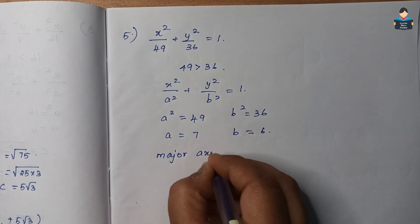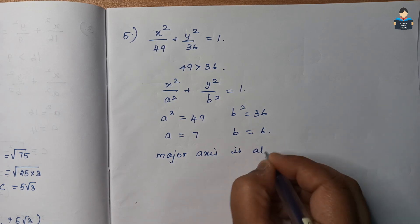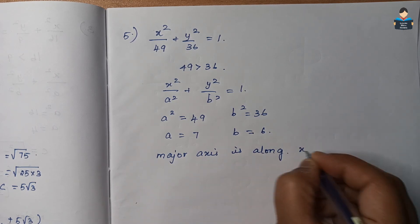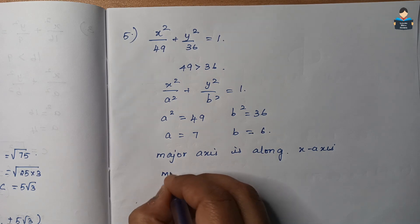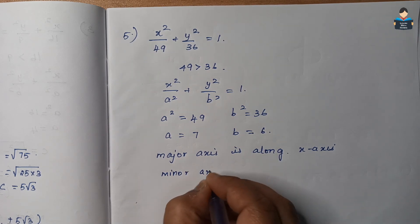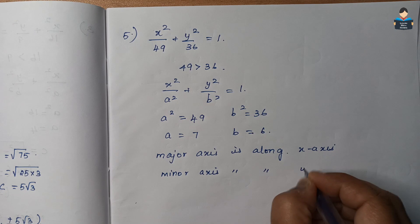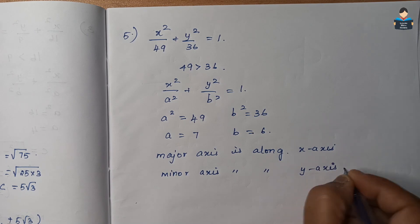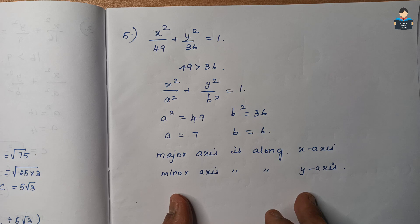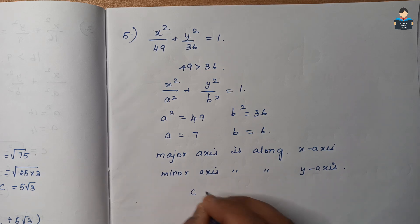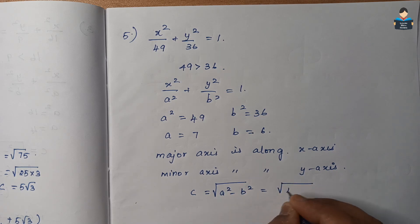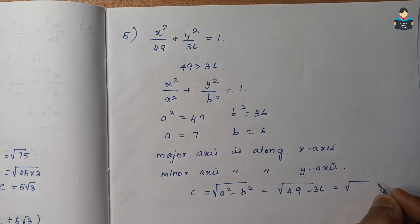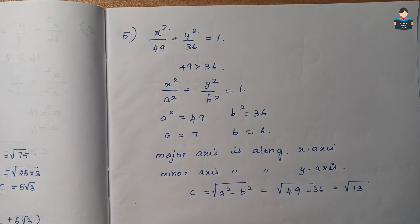Major axis is along the x-axis and minor axis is along the y-axis. Now finding c: c = √(a² − b²) = √(49 − 36) = √13.